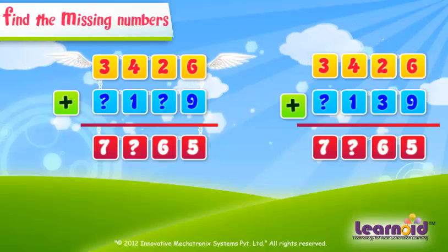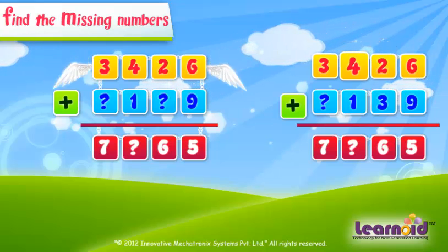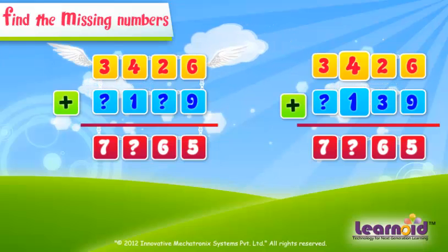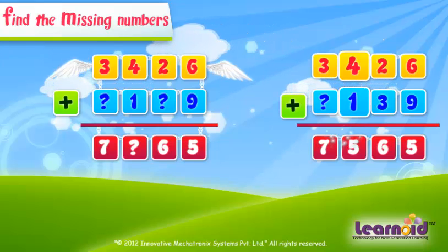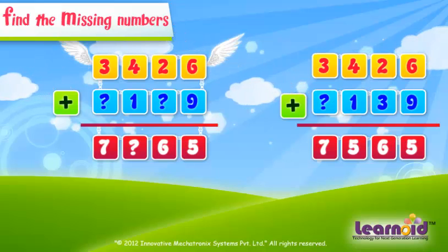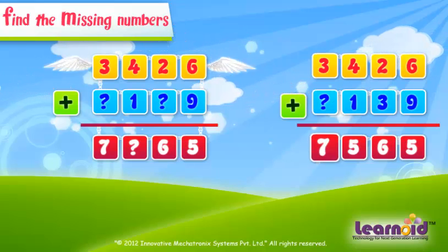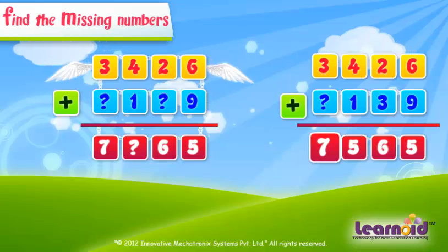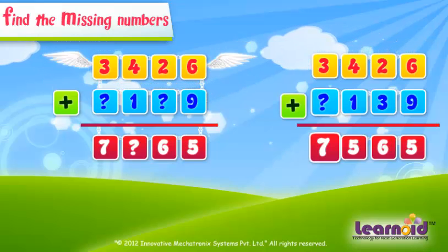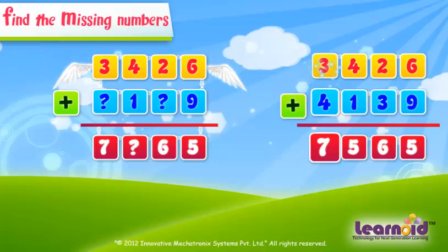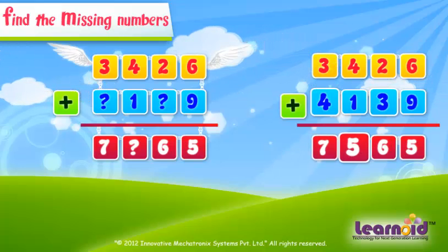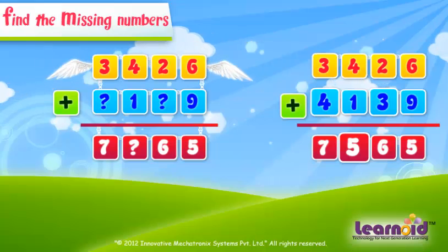Now, in the 100's column, 4 plus 1 is equal to 5. And in the 1000's column, to get 7, we have to add 4. The missing digits will be 3, 5, and 4.